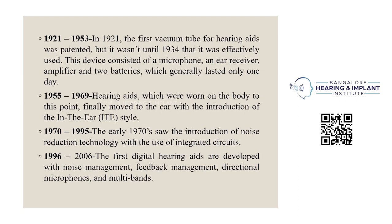This device consisted of a microphone, ear receiver, amplifier, and two batteries which generally lasted only one day. In 1955 to 1969, hearing aids which were worn on the body finally moved to the ear with the introduction of the in-the-ear ITE style model. In 1970 to 1995, the early 1970s saw the introduction of noise reduction technology with the use of integrated circuits in 1966. By 2000 to 2006, the first digital hearing aids were developed with noise management, feedback management, directional microphones, and multi-bands.